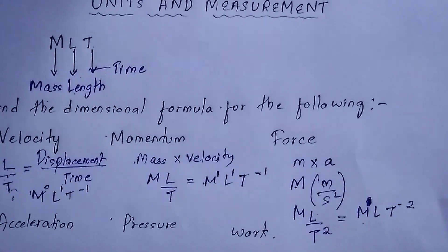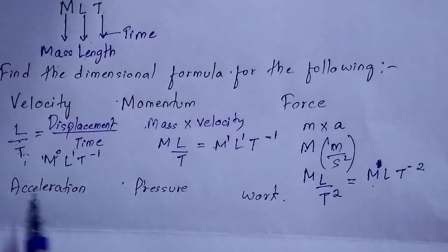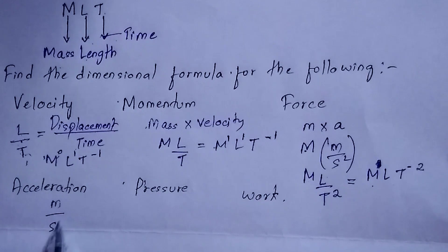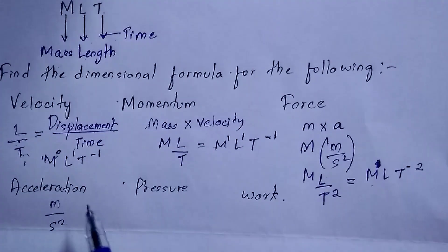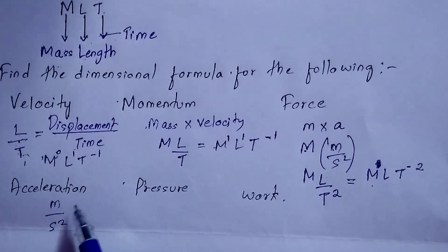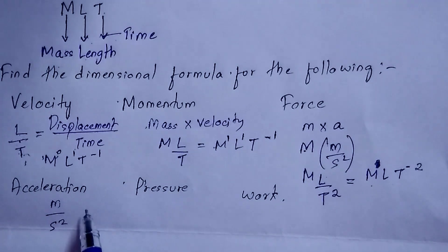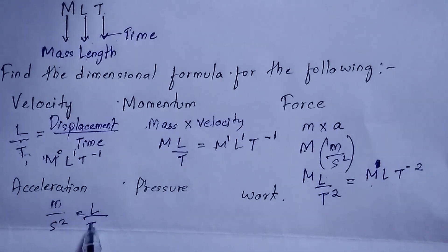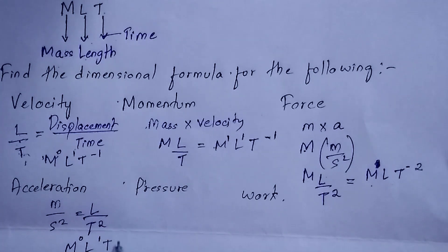Next is acceleration. Acceleration is meter per second squared. Meter is length — don't confuse this with mass. Here there is no M, this is length L, and second is time so it is T squared. There is no M, so it will be M⁰L¹T⁻². This is how you find the dimensional formula for acceleration.